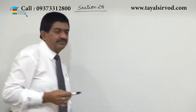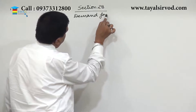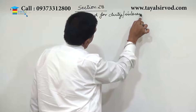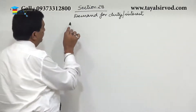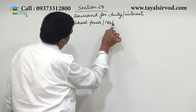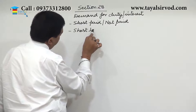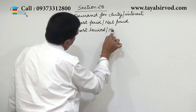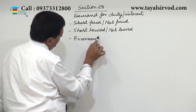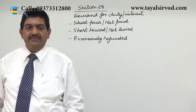Now we start with Section 28. This section is about demand — demand for duty or interest or both, which is either short paid, not paid, short levied, not levied, or erroneously refunded. These five situations are important to remember.